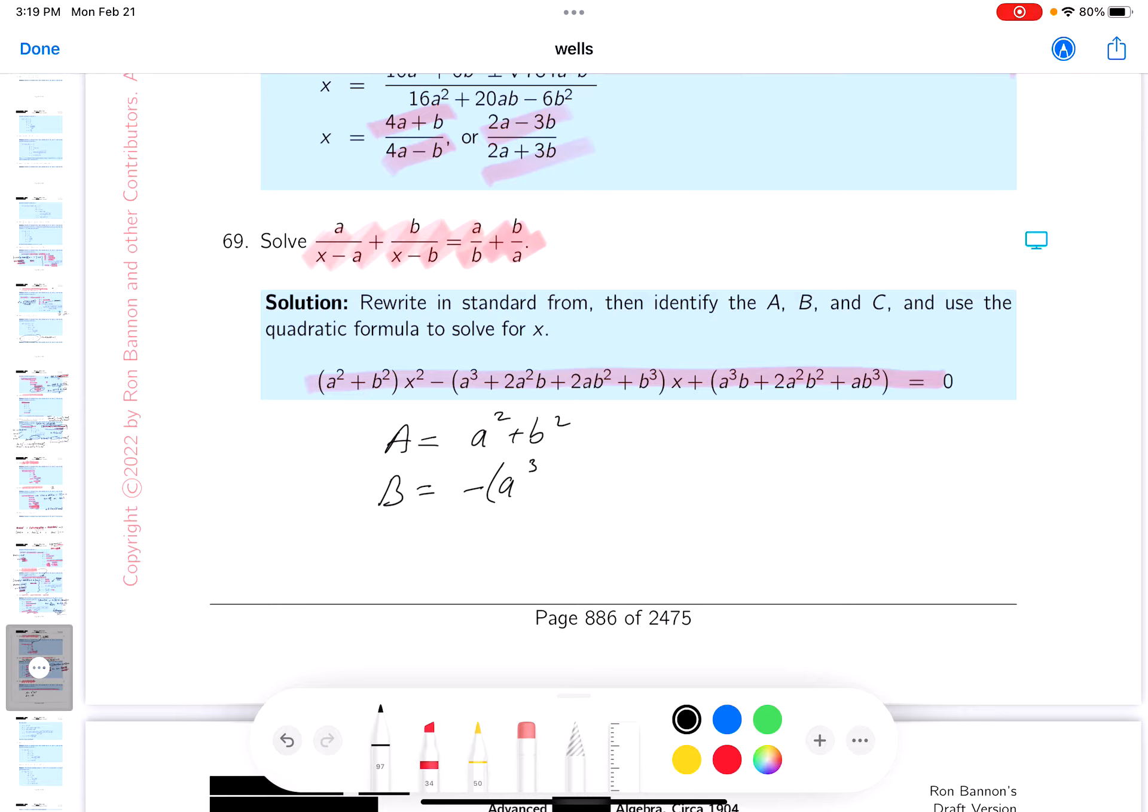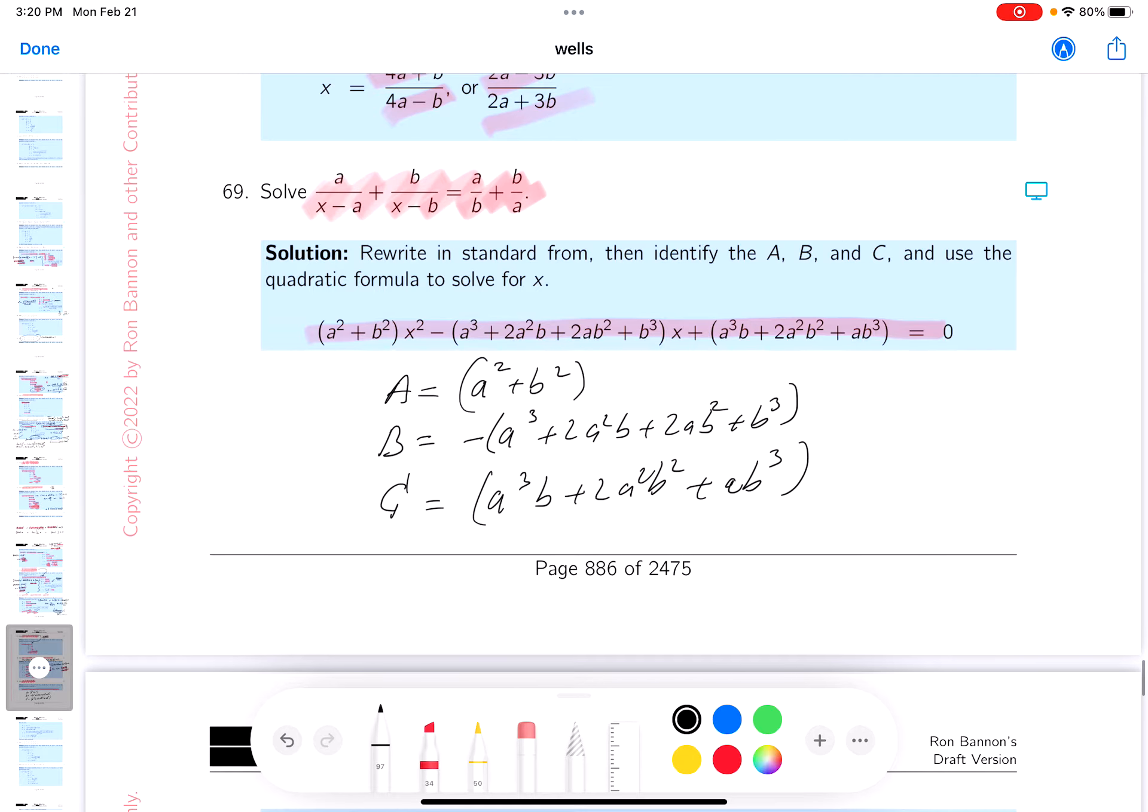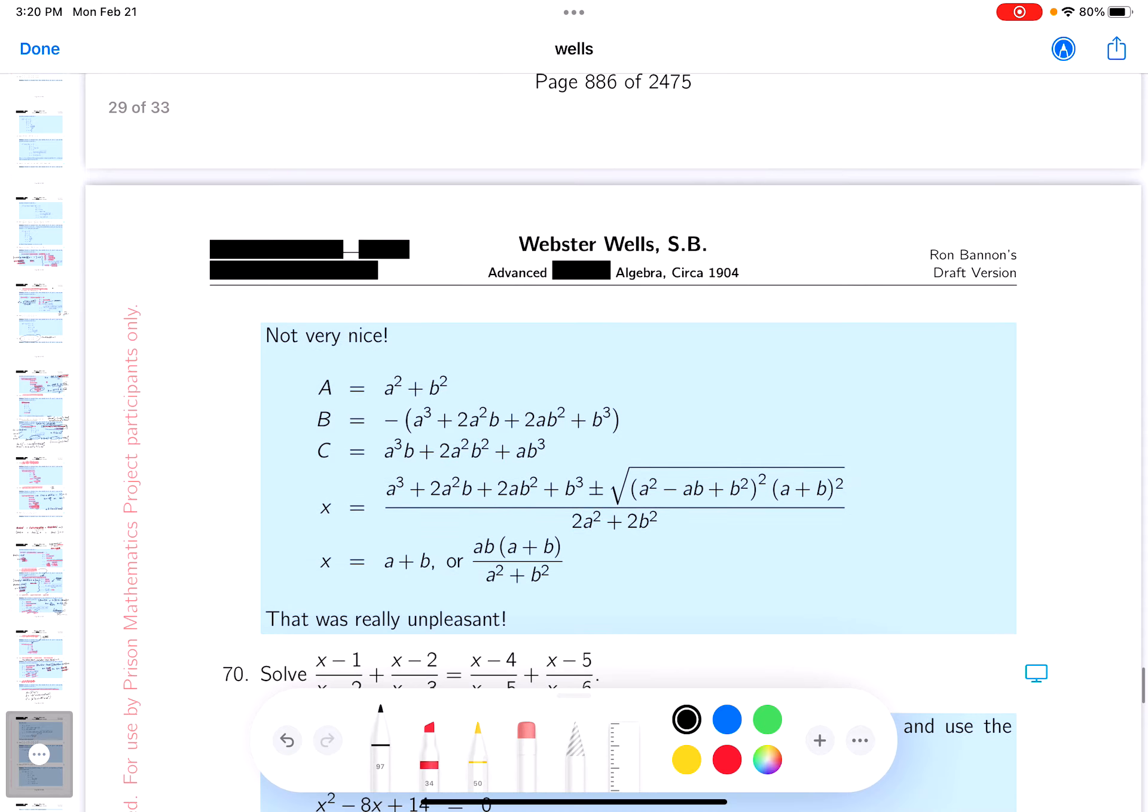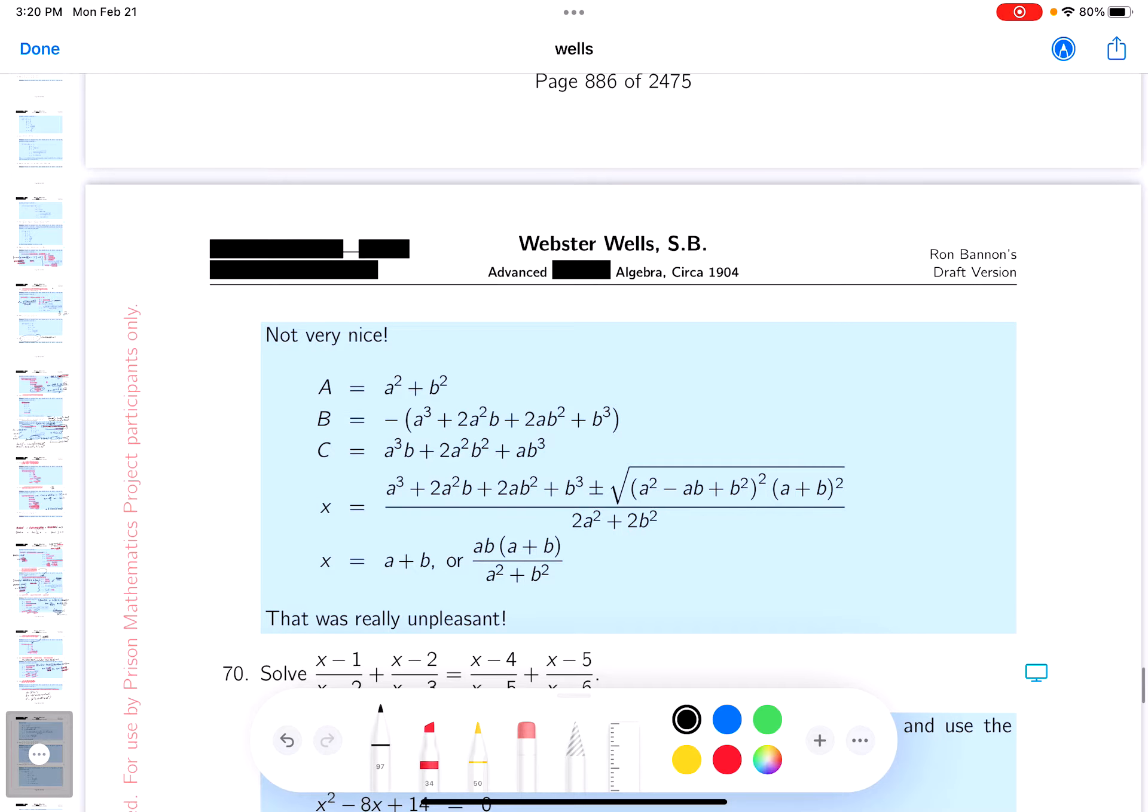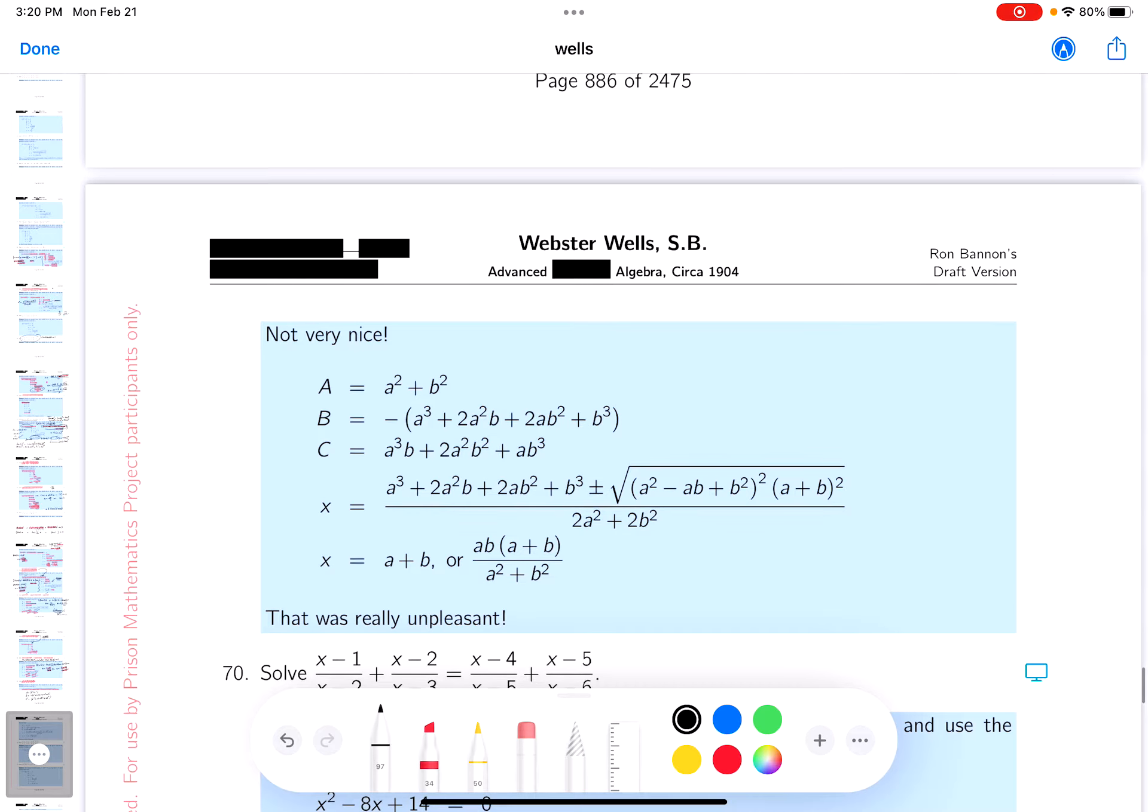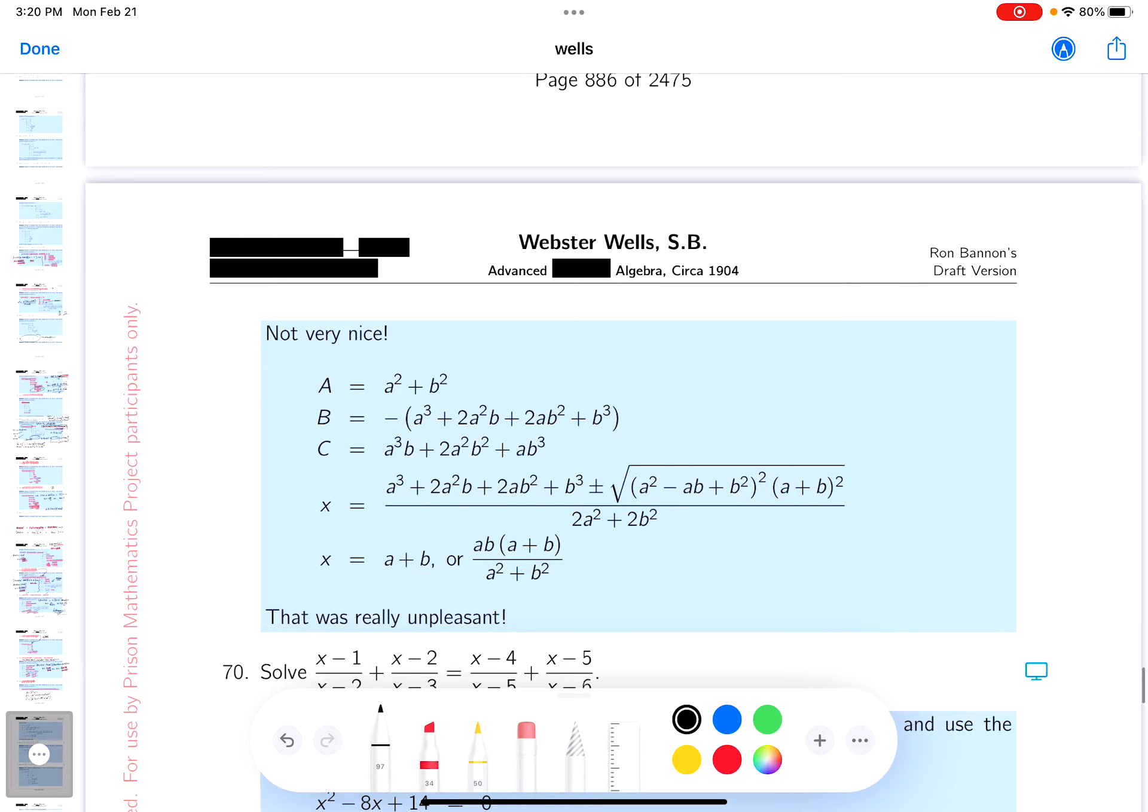minus the quantity a cubed plus 2a squared b plus 2ab squared plus b cubed. And the C is going to be a cubed b plus 2a squared b squared plus ab cubed. Yeah, it's kind of nightmarish, there's no doubt about it. But for instance, over here, then what do you do? Go the quadratic formula. It's very unpleasant. I want to point out though it can be factored if you want.